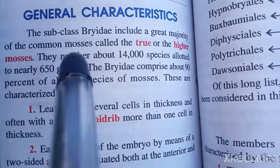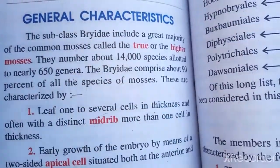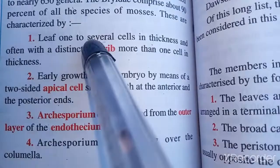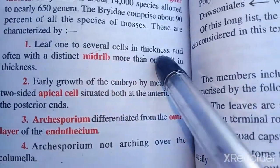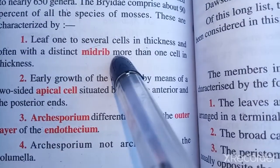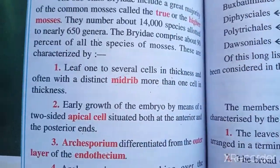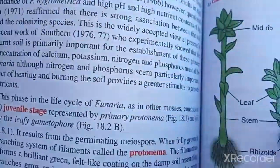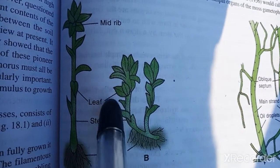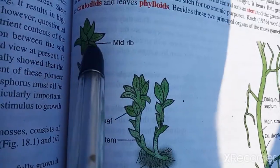About 90% of mosses we get to see have leaves with several cells in thickness, and often they have a distinct midrib that is more than one cell in thickness. This structure is called the midrib.